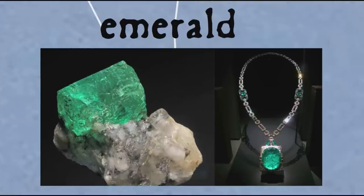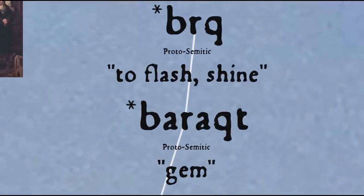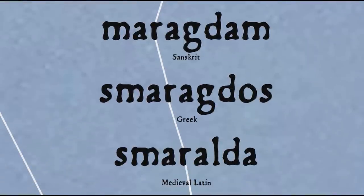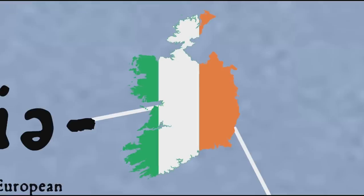Some other colour words in the range of green include the green gem emerald, from a Semitic verb meaning to shine — 'bāraq', the basis of the noun 'bāraqt' meaning gem. This made it into the vernacular languages of India as 'maragata', then into Greek as 'maragdos' (green gem), and the variant form 'smaragdos', which passed into Latin as 'smaragdus', becoming post-classical Latin 'smaralda', and after becoming Spanish 'esmeralda' and Old French 'esmeraude', became English 'emerald'. The phrase 'emerald isle' in reference to Ireland first appeared in 1795.